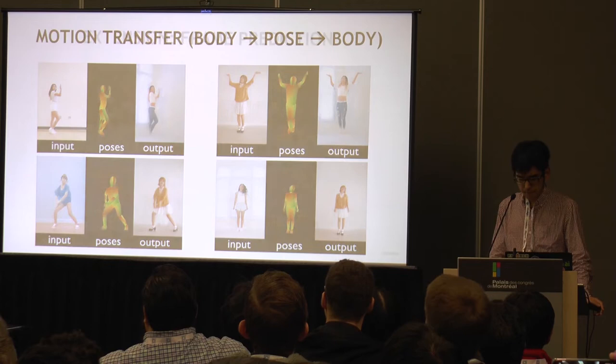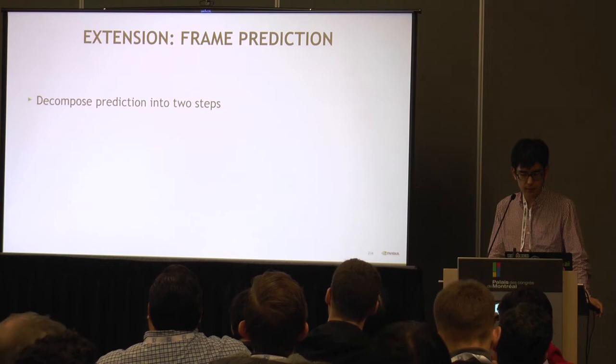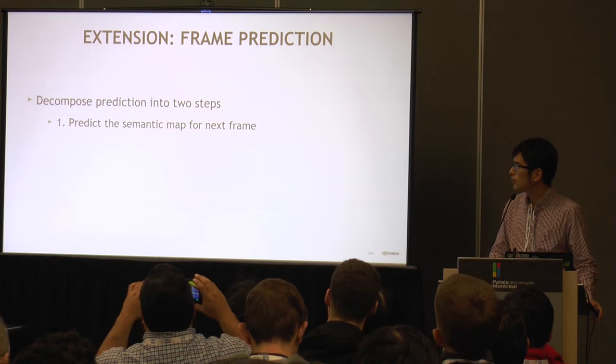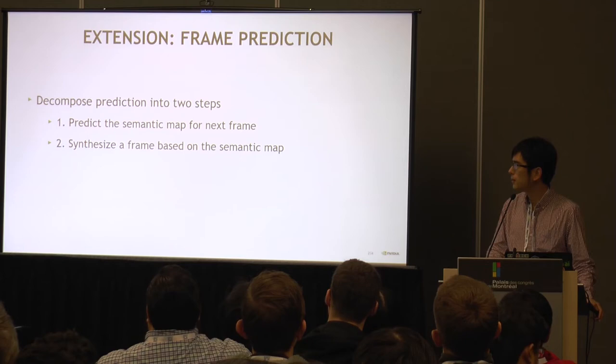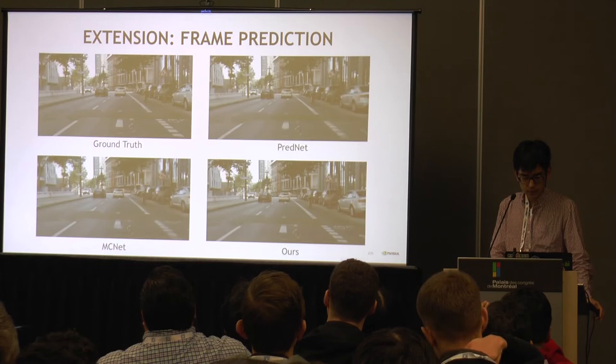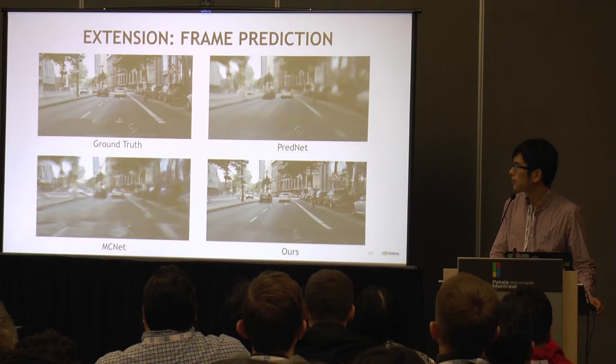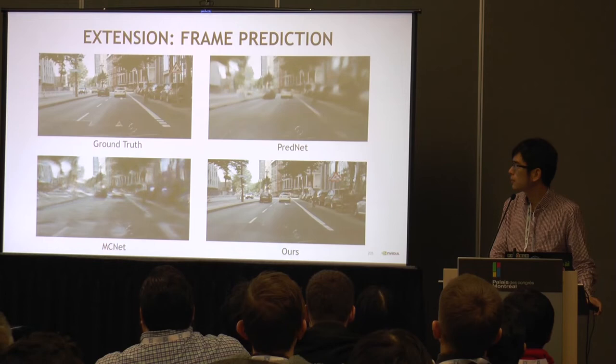Finally, we show an extension to frame prediction. The key idea is that we decompose the prediction into two steps: first we predict the semantic map for the next frame given the past frames, and then using this semantic map, we synthesize the new frame based on the predicted semantic map. Here are some example results compared to three other methods. As you can see, they quickly become blurred as time evolves, while ours still stays sharp.